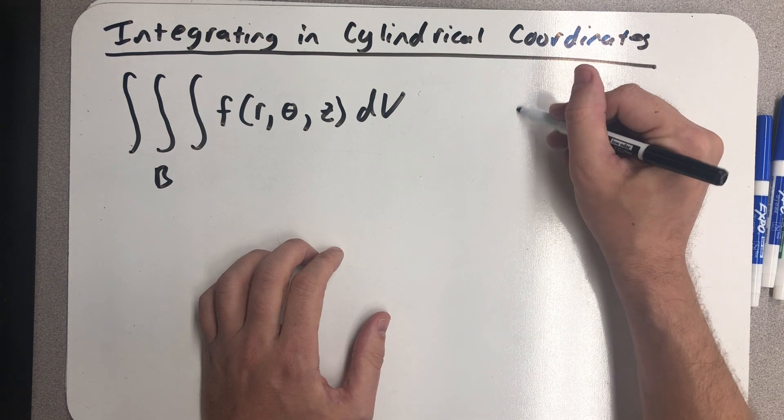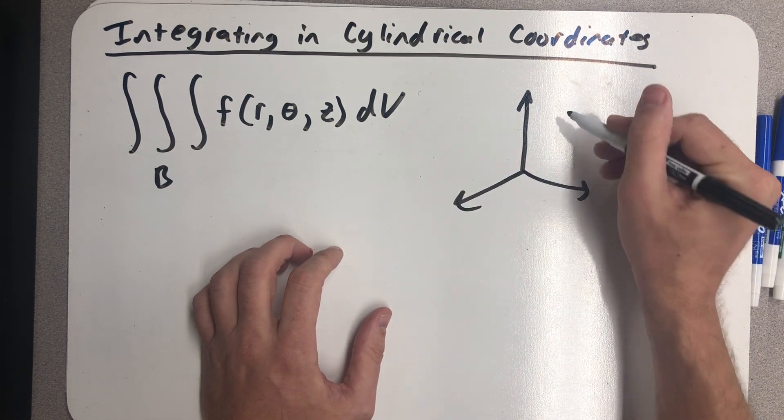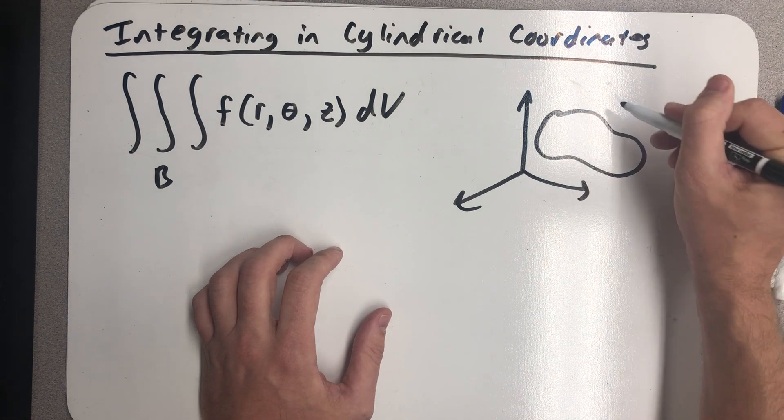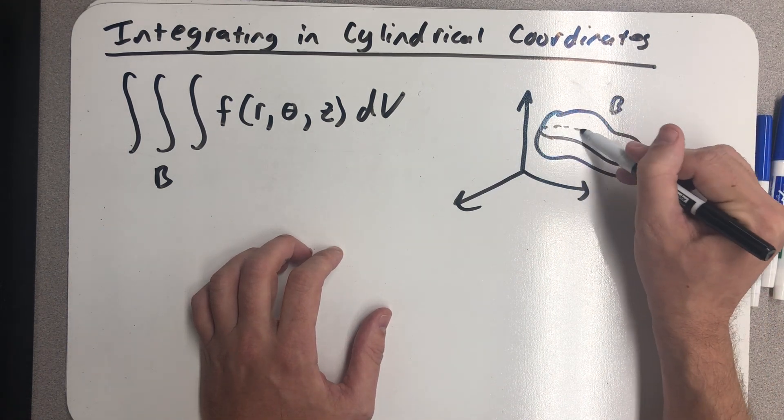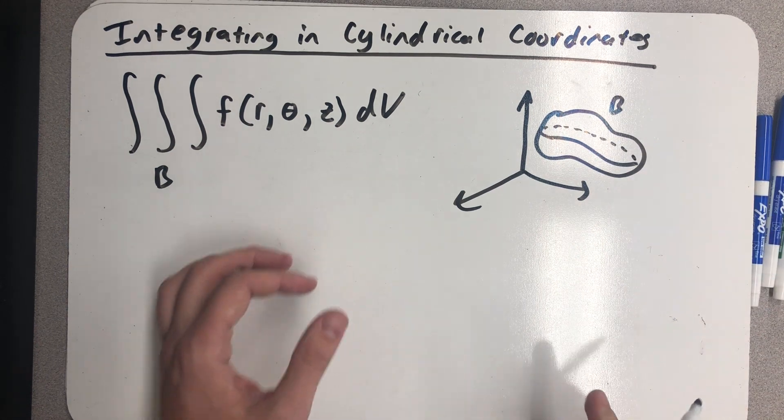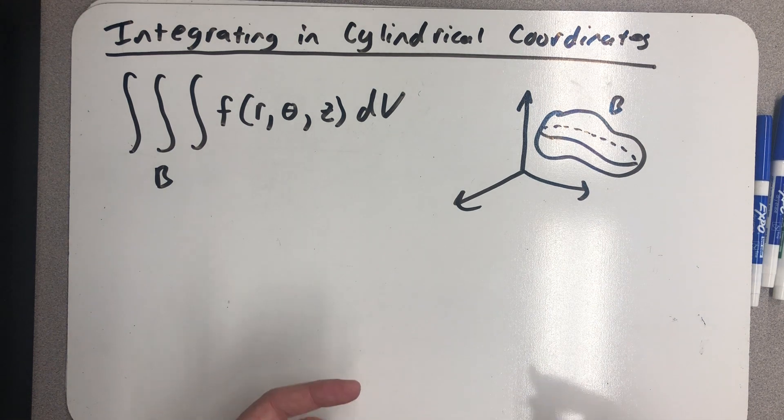Our first job would be to understand the region B, whatever it was in space, and imagine dividing it up into sub-intervals. We should think about what a sub-interval looks like in cylindrical coordinates.